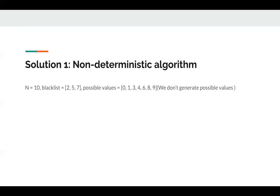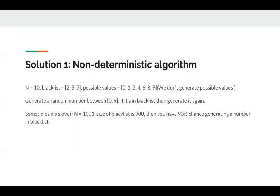Solution one is a non-deterministic algorithm. We generate a random number between 0 to 9, and if it's in the blacklist, we just regenerate until it's not. There's a chance we always generate 2, 5, or 7, so we may need to regenerate again and again — it's non-deterministic since there's a chance it will not stop. Also, if n is 1001 and the blacklist size is 900, there's a high probability we keep generating blacklist numbers.